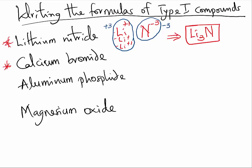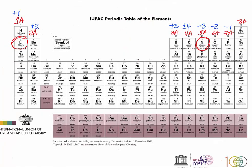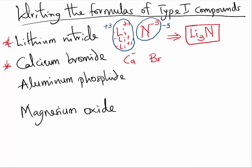Let us take a look at the second one: calcium bromide. Again, we have two elements. The first one is calcium. The second one is bromine. Take a look at the periodic table. Calcium is from group 2A, which means it will always have a charge of plus 2. Bromine is from group 7A. It will have a charge of minus 1.